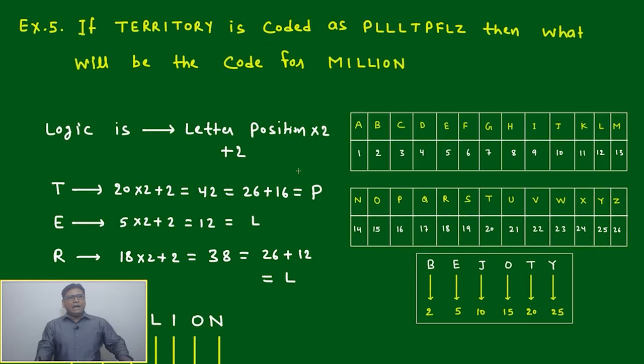Moving to question number five, you will find something different from the last three or four questions. The logic here will be totally different. Let's go through the question: if TERRITORY is coded as PLLITPFLZ, then what will be the code for MILLION? First, we have to understand how the coding is changing.